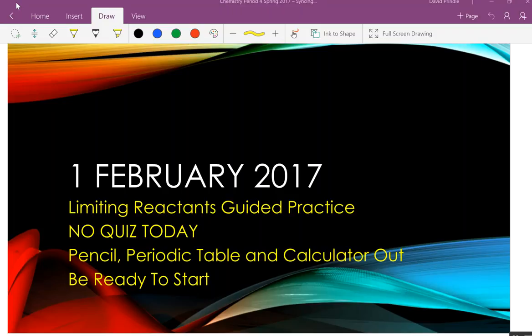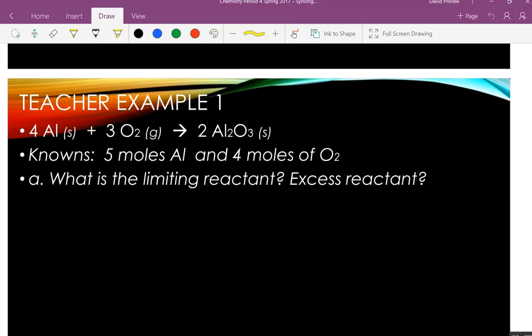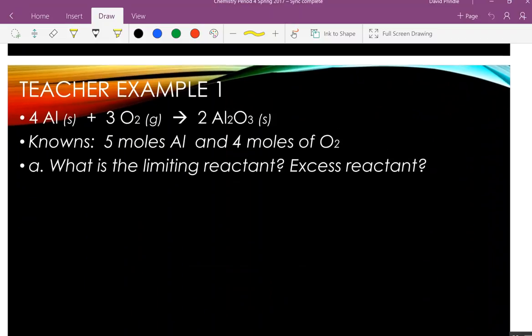We've got four problems to do. I'm going to do one and you're going to help me along with it, then you're going to do one, and then we'll switch back. Here's our first problem. It's labeled at the top with a T. It's already balanced for us. We have our reactant amounts right here, and we have to find the limiting reactant.